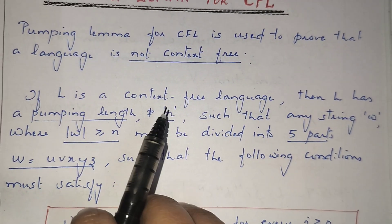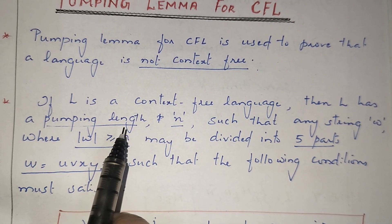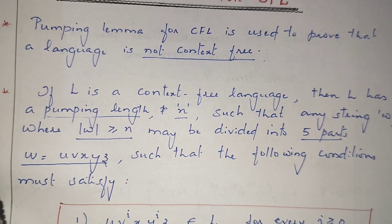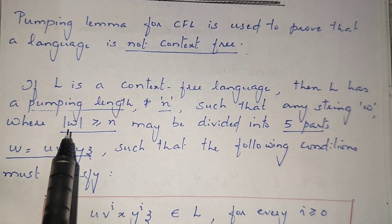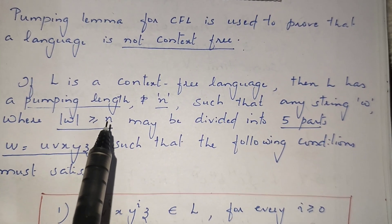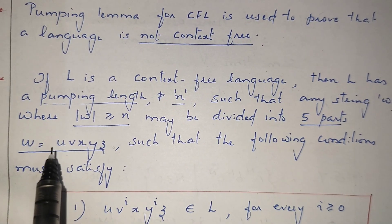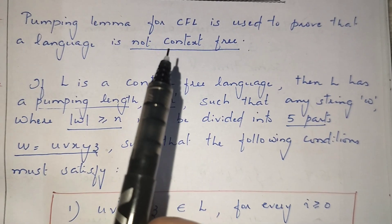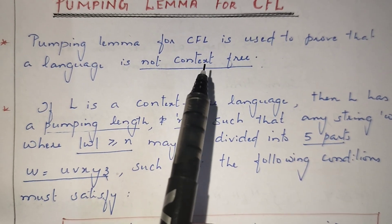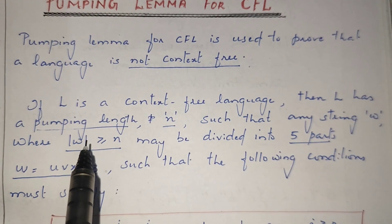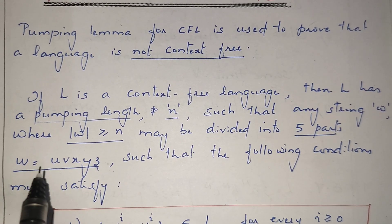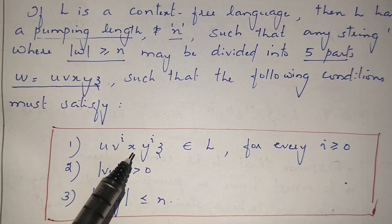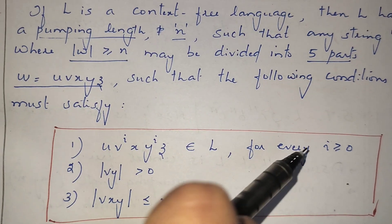We take a language L which is a context-free language. Then L has a pumping length n such that if we take any string w from the language L and the length of that string is greater than or equal to the pumping length, then we can divide the string into five parts: u, v, x, y, z. In the case of regular language we divide into three parts, but for context-free language we divide w into five parts u v x y z.